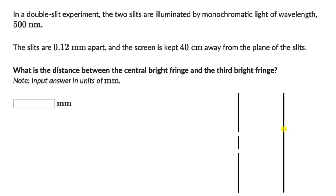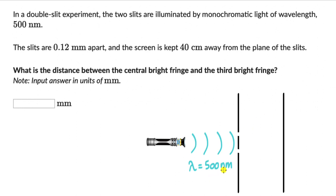The two slits are illuminated by a monochromatic light of wavelength 500 nanometers. The slits are 0.12 millimeters apart — that is the distance d between the two slits. The screen is kept 40 centimeters away from the plane of the slits, so capital D is 40 centimeters.